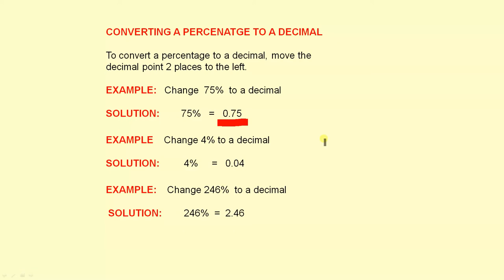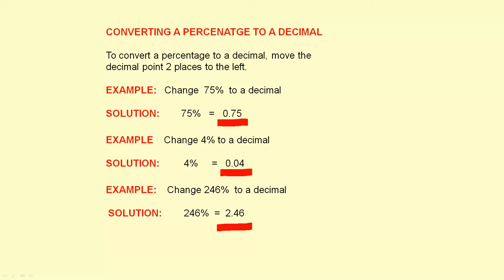Change 4% to a decimal. Move the decimal point two places to the left — one, two — the answer is 0.04. Change 246% to a decimal. Move the decimal point two places to the left — one, two — and your answer is 2.46.